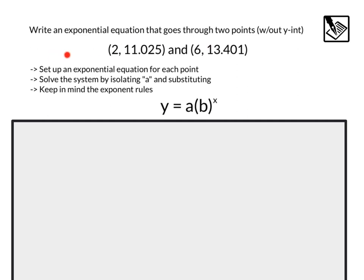Let's take this up a notch. Write an exponential equation that goes through two points without knowing the y-intercept. For example, we have the points (2, 11.025) and (6, 13.401). And here's what we're going to do to solve for that. We're going to set up an exponential equation for each point, creating a system of equations. Then we'll solve the system by isolating a and substituting in, or using the equal values method, however you want to call it. And then, one thing we are going to need to use is our exponent rules of division. Some problems might have negative exponents. That's okay. We'll be able to work with those and eventually get our exponential equation.